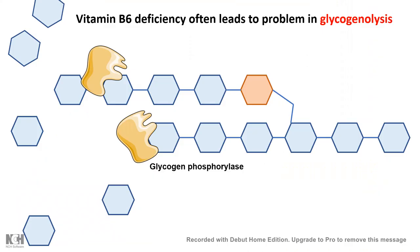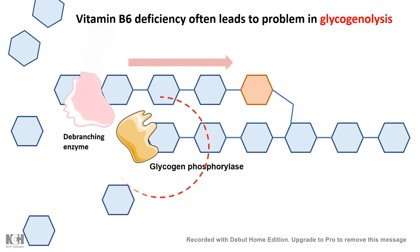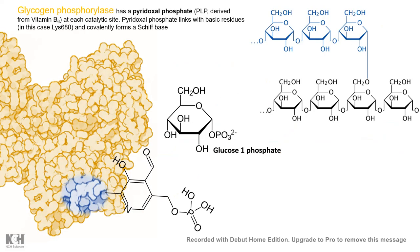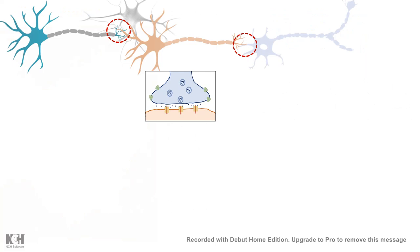Vitamin B6 deficiency also causes problems in glycogenolysis. Glycogen phosphorylase, the key enzyme in glycogenolysis, uses pyridoxal phosphate as a coenzyme and takes an active part in the catalytic process. This is why vitamin B6 is important in glycogenolysis and, more broadly, in glucose metabolism.